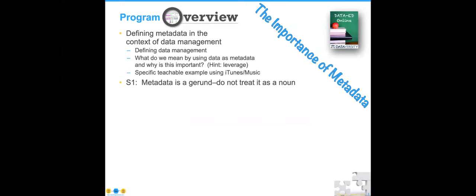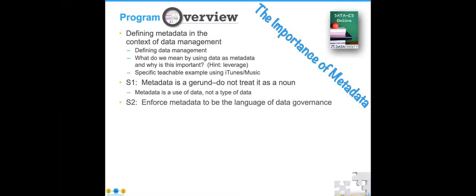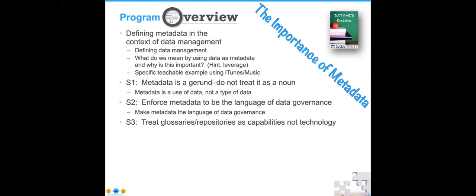We're going to look at four specific strategies. The first one is that metadata is a gerund — do not treat it as a noun. That is, metadata is a use of data rather than a type of data. The second strategy is to enforce metadata to be the language of data governance. When I work with organizations that are having trouble with their data governance, it is typically because they are not speaking from the same language or understanding. Strategy number three is to treat glossaries and repositories as capabilities, not as technology. Cyclical approaches tend to start out in a way that the organization can crawl, walk, and run their way towards success.